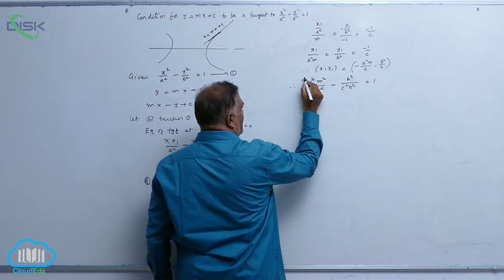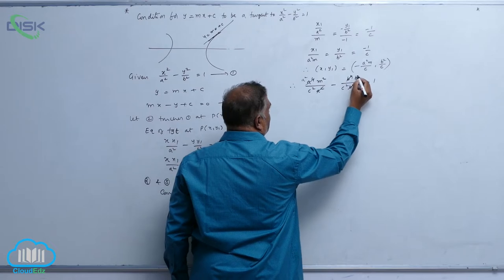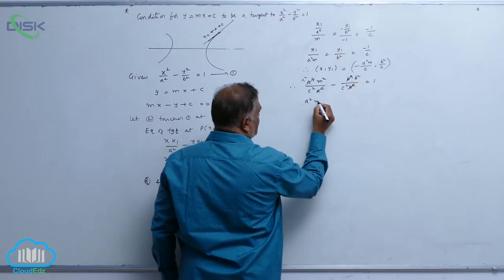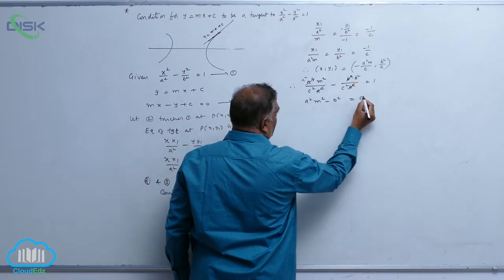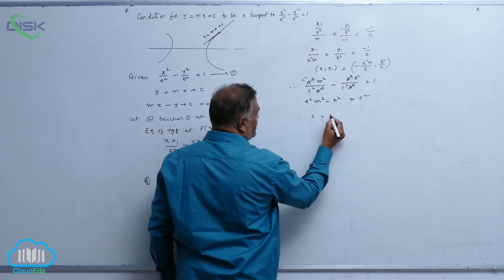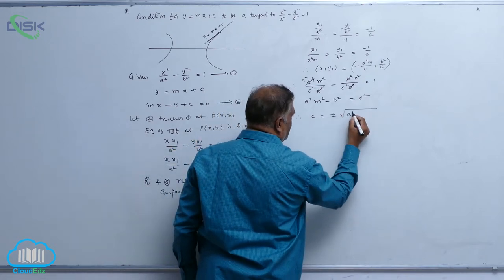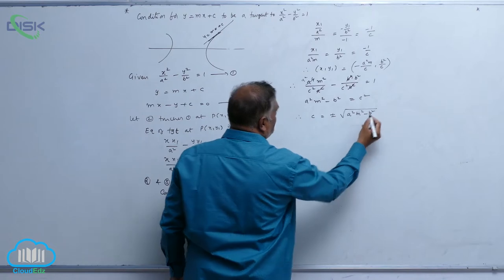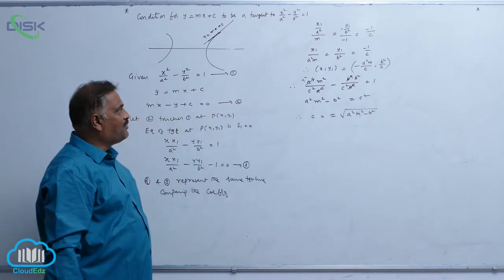After cancellation, a² cancels and b² cancels, giving us a²m² - b² = c², or c = ±√(a²m² - b²). This is the required condition for y = mx + c to be a tangent to the hyperbola.